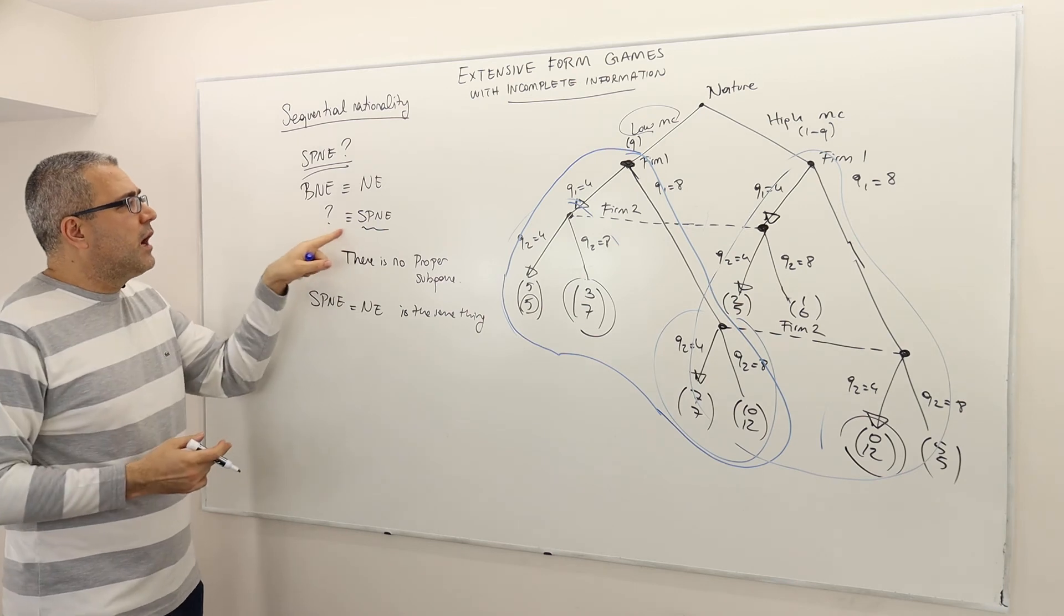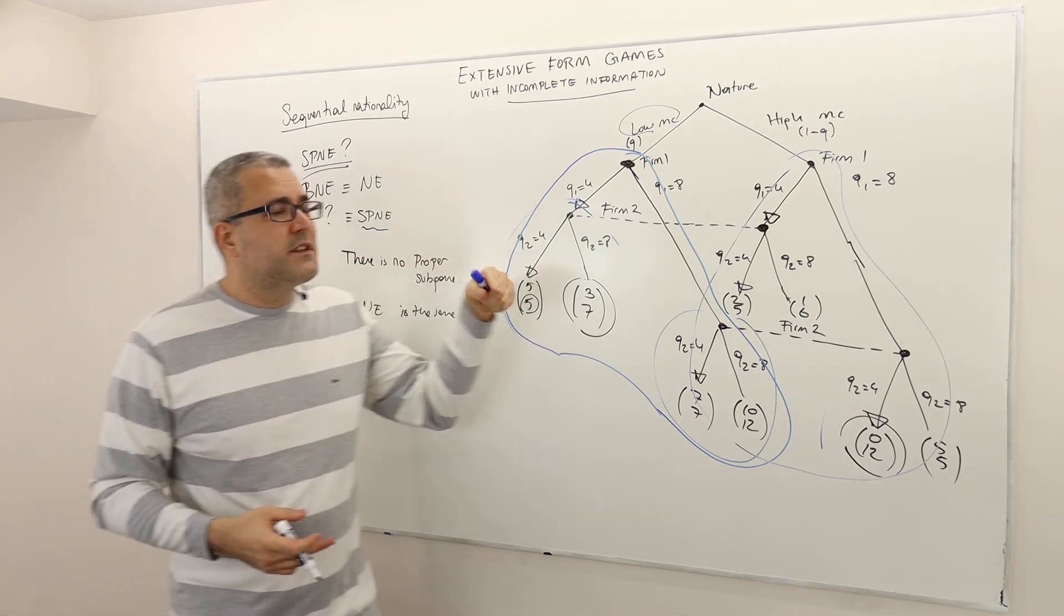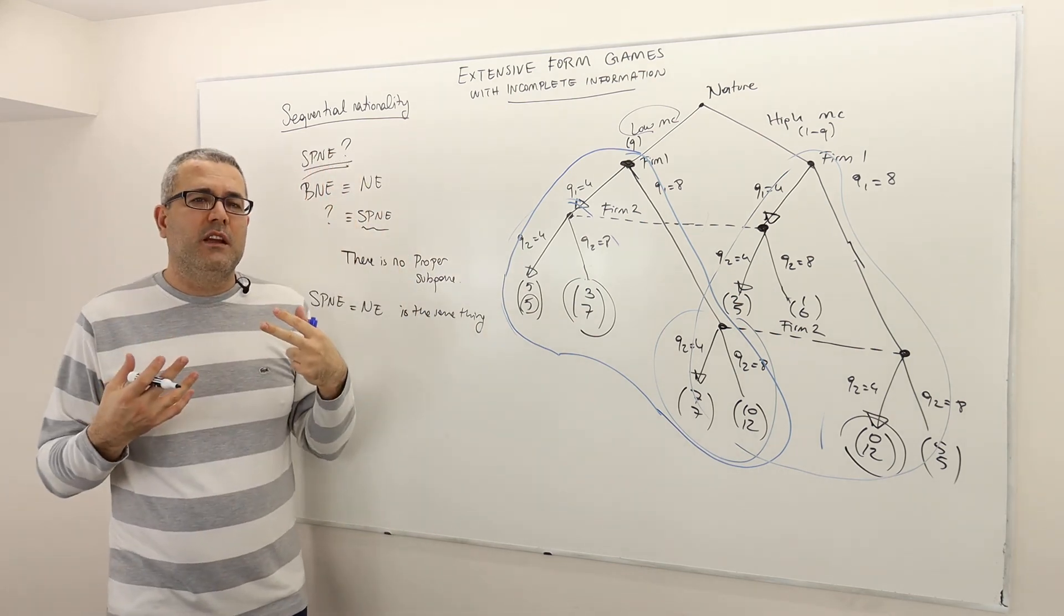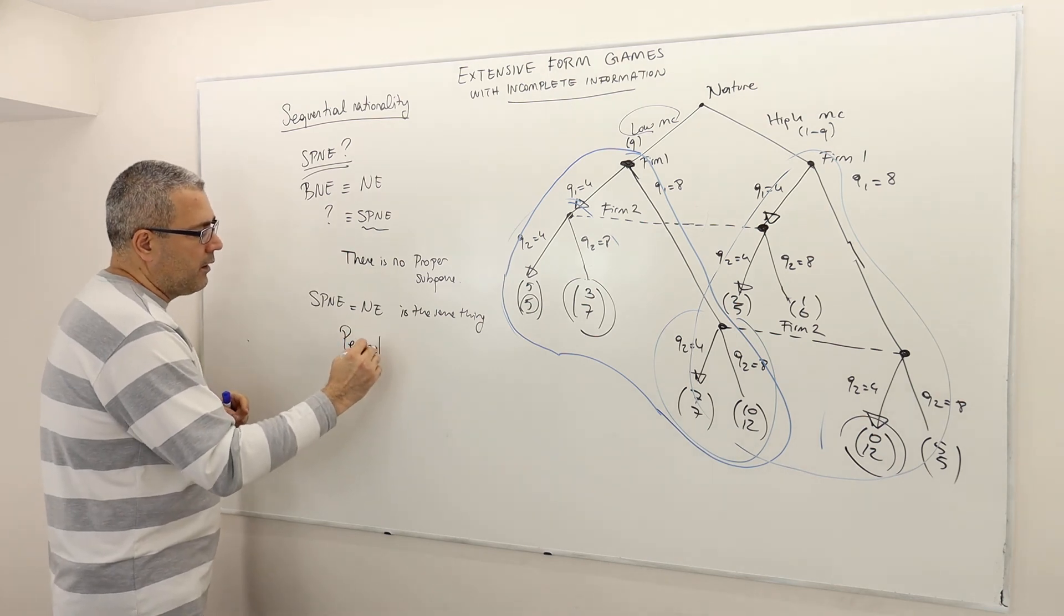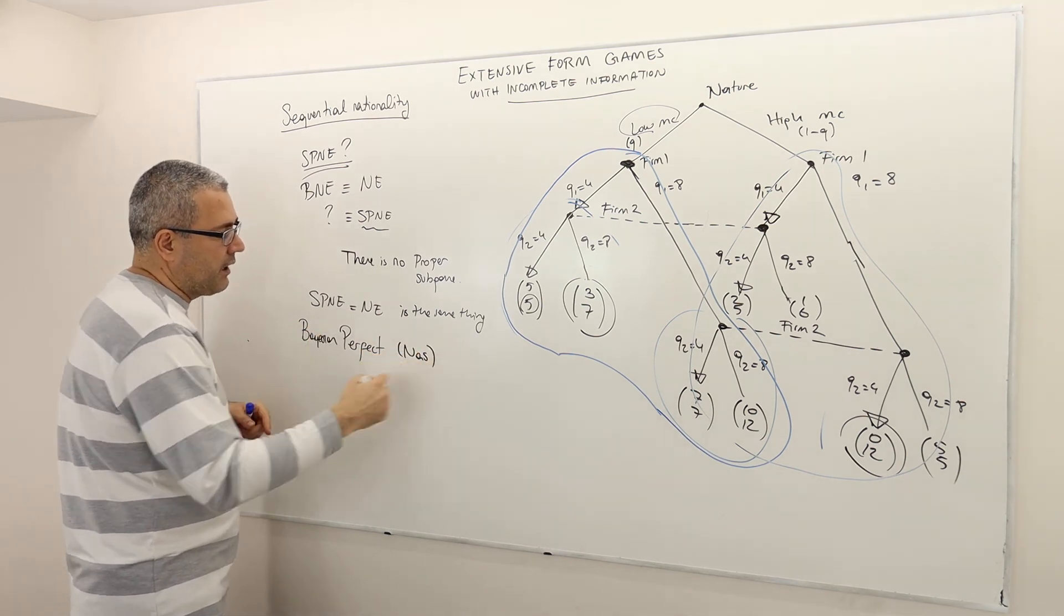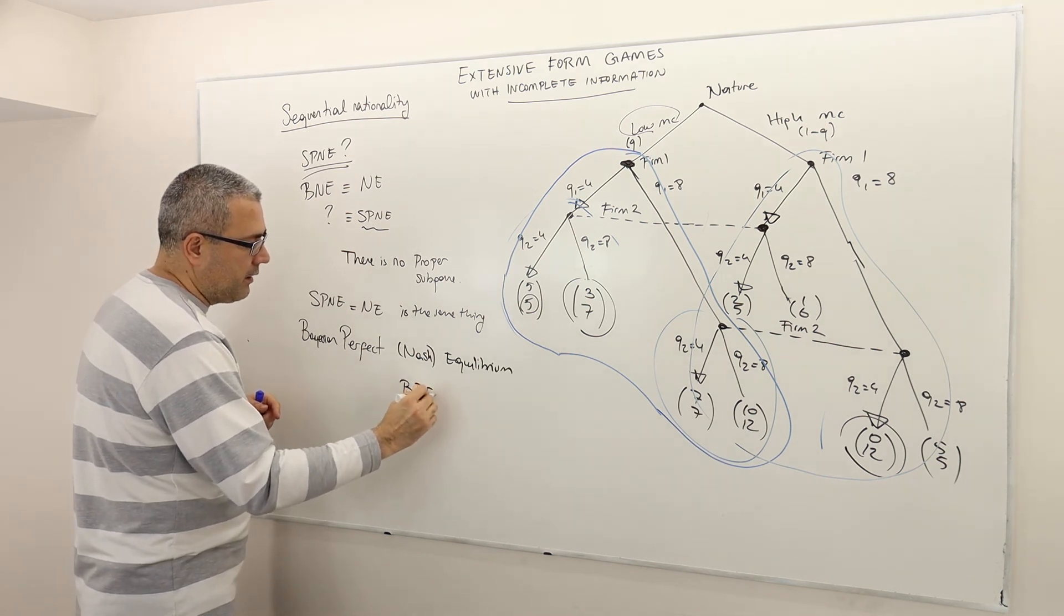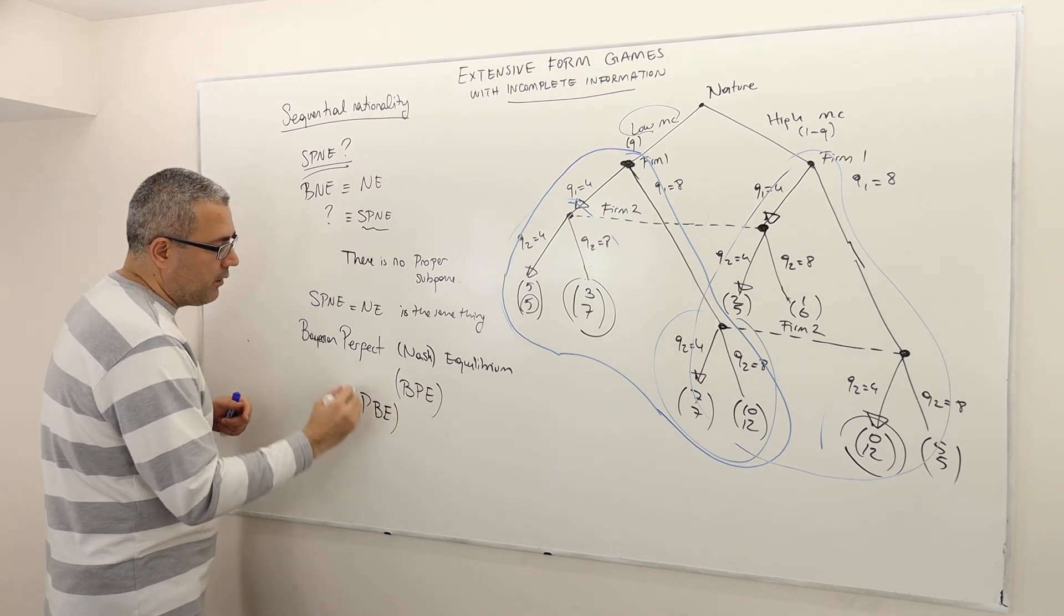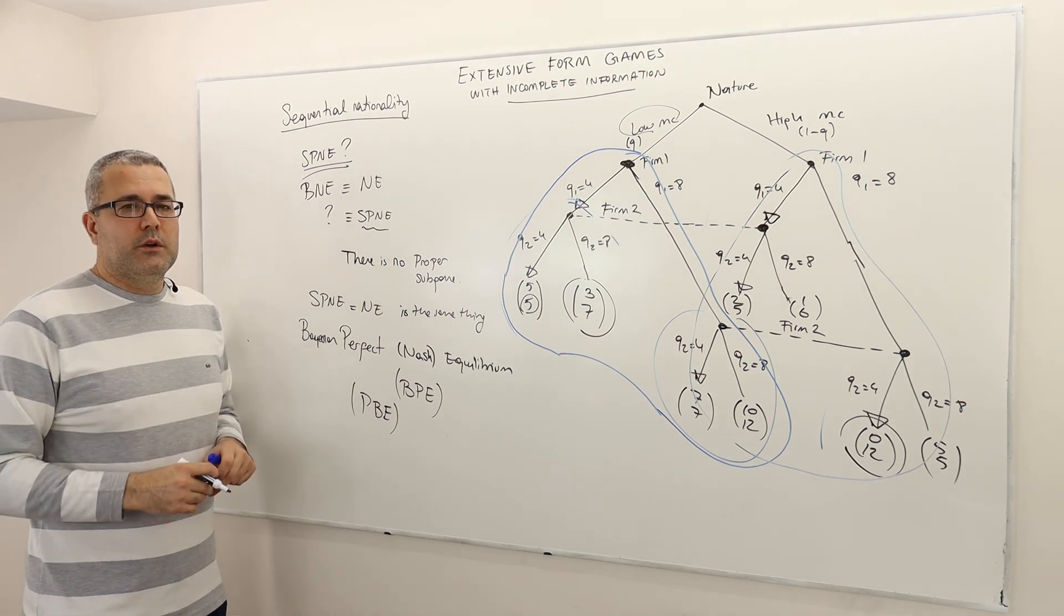So what am I going to do? Remember, I want to find an equivalence of SPNE in incomplete information games. So therefore, this idea of subgame is not going to be helping me. So I need to find another way of incorporating sequential rationality. And this is exactly what we are going to do in our next solution concept, which is what we call Bayesian perfect, sometimes we call it, sometimes we don't, Nash equilibrium. And to be honest, I usually call it BPE. By the way, sometimes we call it PBE, perfect Bayesian Nash equilibrium or BPE. I don't mind to be honest which one is which. So whether the perfect is first or the Bayesian is first, I don't mind, but this is what we're going to learn next.